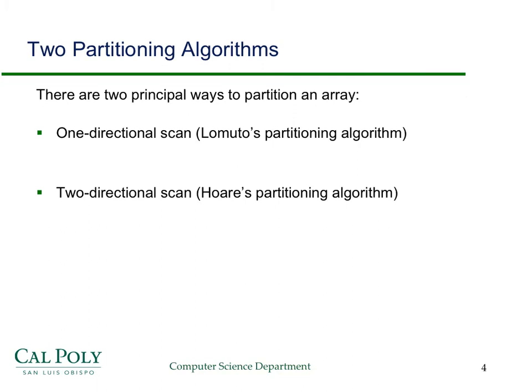There are two main partitioning algorithms. There's a one-dimensional scanning algorithm called Lomuto's partitioning algorithm, and it is easier to implement correctly, but slightly less efficient in certain circumstances than Hoare's partitioning algorithm, which is a two-directional scan. And you'll see the difference. I'm going to spend most of the time here on the one-directional scan because it's easier to get correctly.